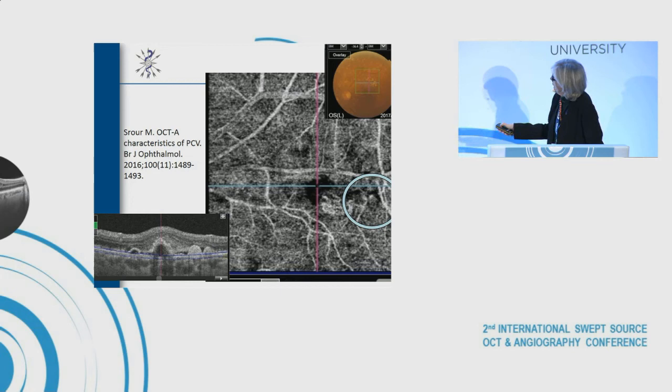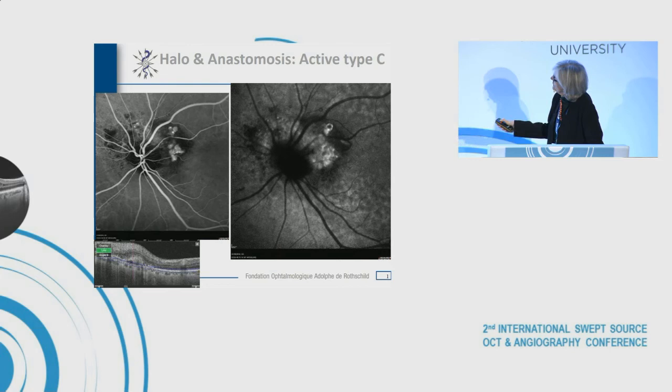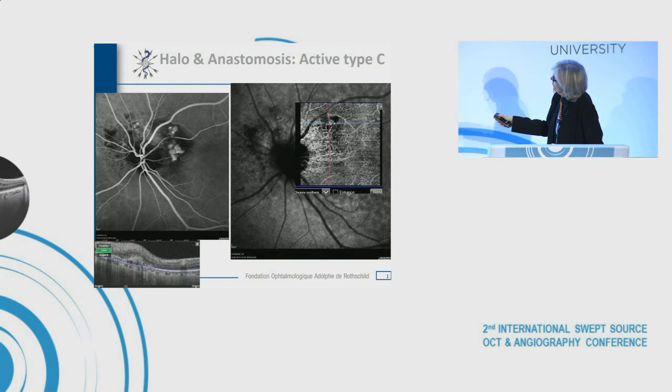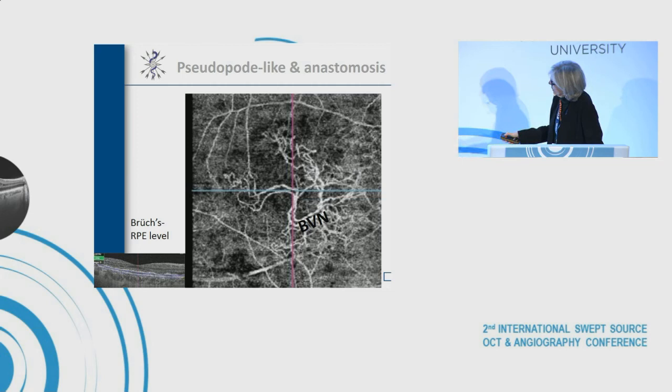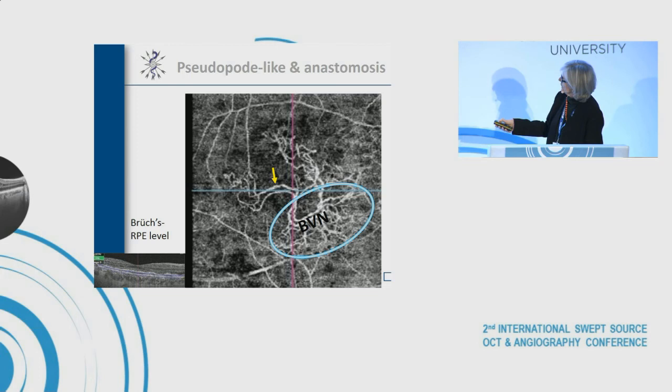Here, another case with active Type C PCV where the branching vascular network is quite dense. There is a kind of feeder vessel extruding from the branching, ending in a polyp or a kind of anastomosis. We often see this aspect of branching vascular network with a pseudopod extruding from the branching — this kind of extrusion from the branching vascular network, feeder vessels or anastomosis, ending in the polyps.